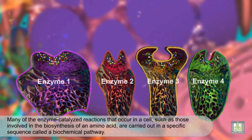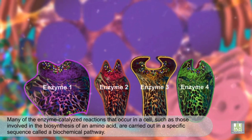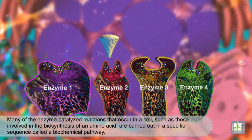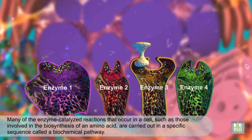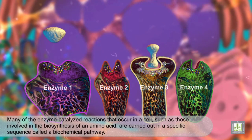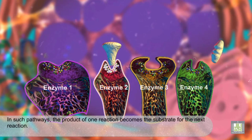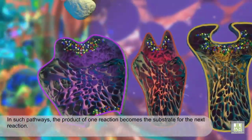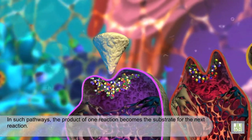Many of the enzyme-catalyzed reactions that occur in a cell, such as those involved in the biosynthesis of an amino acid, are carried out in a specific sequence called a biochemical pathway. In such pathways, the product of one reaction becomes the substrate for the next reaction.